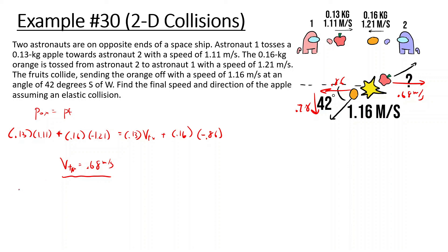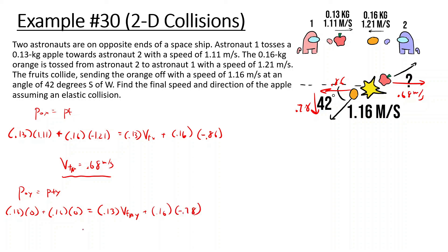Now in the y direction: momentum initial in y equals momentum final in y. The apple was only going right so its initial y-velocity is 0. The orange was only going left, so its initial y-velocity is also 0. After the collision, the orange goes down at −0.78 m/s. Solving: 0 = 0.13 × v_apple_y + 0.16 × (−0.78), so v_apple_y = (0.16 × 0.78) ÷ 0.13 = 0.96 m/s upward.